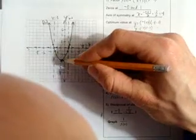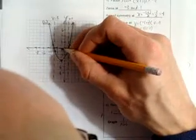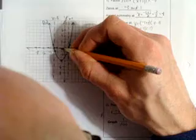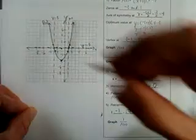The original vertex was (-1, -4). The reciprocal vertex is (-1, -1/4). Now we draw our reciprocal function.